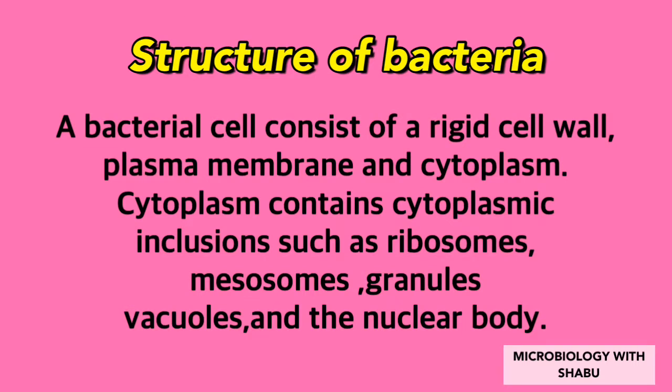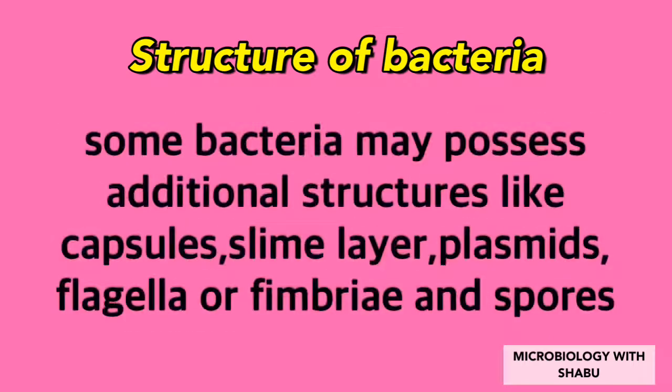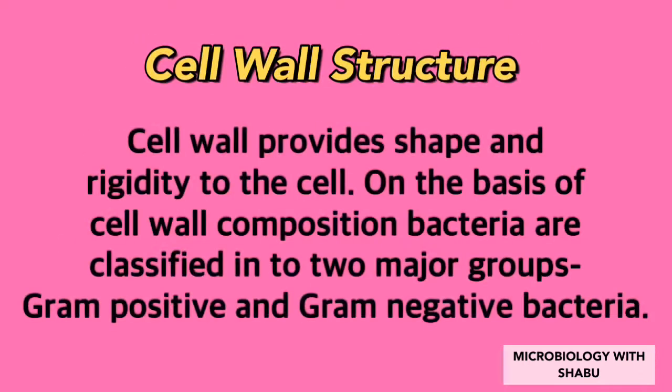Cytoplasm contains cytoplasmic inclusions such as ribosomes, mesosomes, granules, vacuoles, and the nuclear body. Some bacteria may possess additional structures like a capsule, slime layer, plasmids, flagella or fimbriae, and spores.